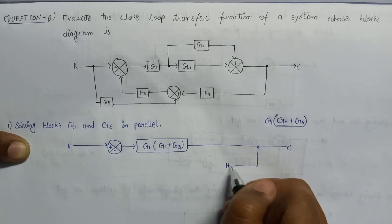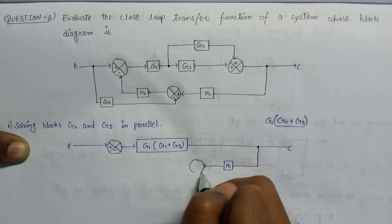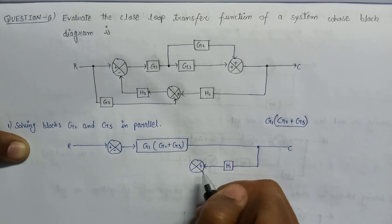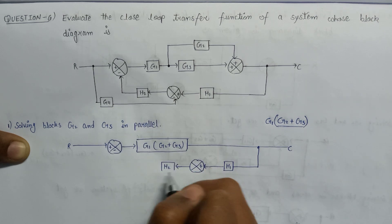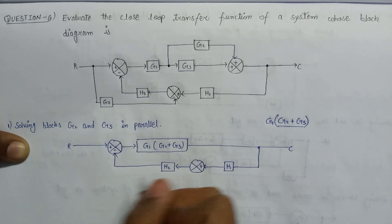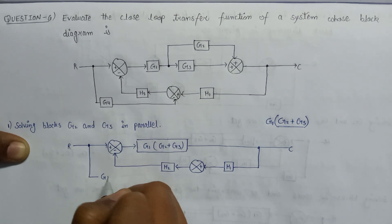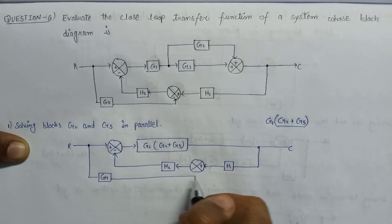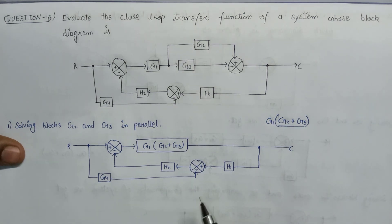There is a summing point which is applied to H1. The output of H1 is applied to another summing point with positive polarity, which is connected with another feedback gain H2, and it is applied to this summing point. There is also another takeoff point with G4 gain, which is connected with this summing point with negative polarity. This is the simplified block diagram.